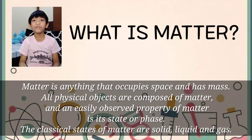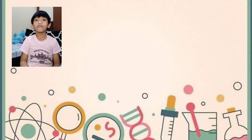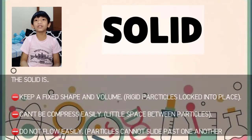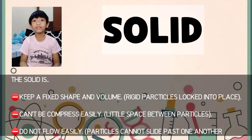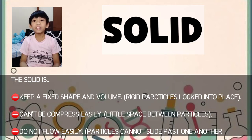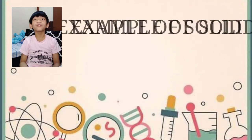Let me give you an example. The first example is solid. Solid keeps a fixed shape and volume. Rigid particles are locked into place. Little space between particles. Do not flow easily. Particles cannot slide past one another.